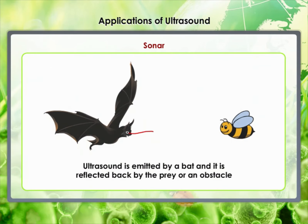Bats search out prey and fly in the dark night by emitting and detecting reflections of ultrasonic waves. The high-pitched ultrasonic squeaks of the bat are reflected from obstacles or prey and return to the bat's ear. The nature of the reflections tells the bat where the obstacle or prey is and what it is like. Porpoises also use ultrasound for navigation and location of food in the dark.